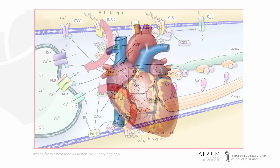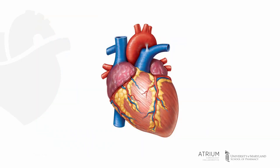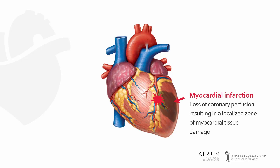In heart failure, contractility is impaired as a result of damage to myocardial cells. This may occur as a result of an acute event, like a myocardial infarction, which results in a localized zone of myocardial damage. In an MI, emphasis is placed on prompt restoration of blood flow to prevent permanent tissue death.